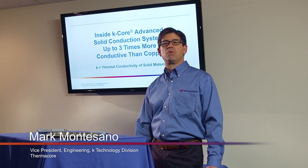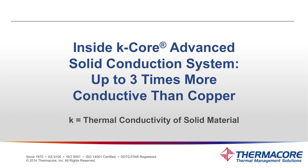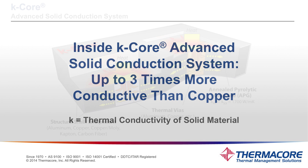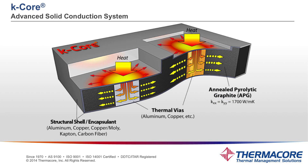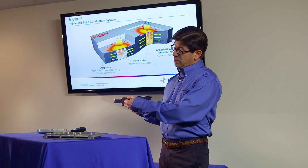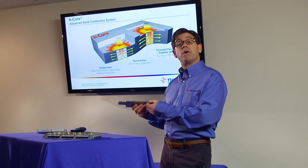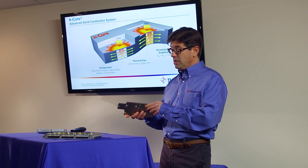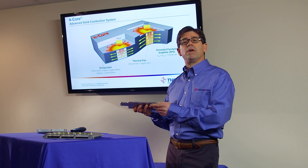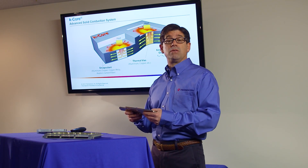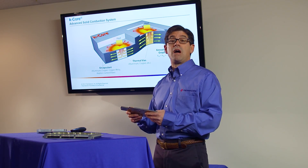Today I'm going to answer some of the questions on technology of advanced solid conduction. The material is called K-Core, and I'll explain how it has high conductivity up to three times that of copper. The basic material is a composite using a very highly conductive graphite material called annealed pyrolytic graphite, which has very high in-plane thermal conductivity of about 1,700 W/mK — about four times that of copper.